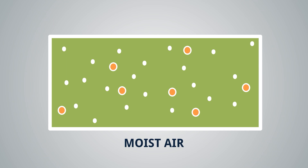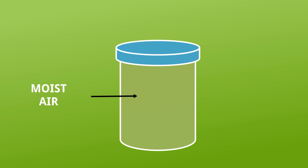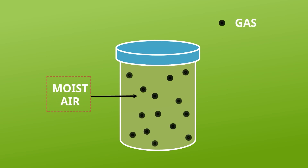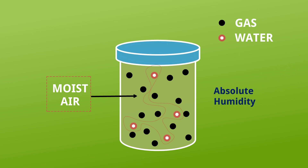Let's take some examples to understand. We'll take this enclosed container — it has gases and water vapor. Now, the amount of water vapor within this particular volume has to be calculated, and this is where absolute humidity is introduced.